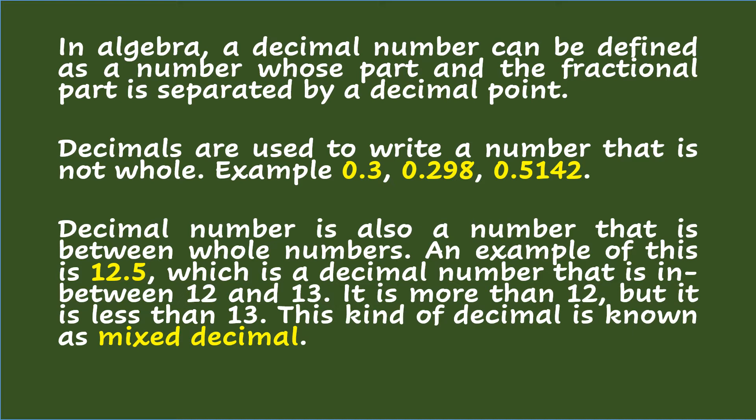A decimal number is also a number that is between whole numbers. An example of this is twelve and five-tenths, which is a decimal number that is in between twelve and thirteen — it is more than twelve but less than thirteen. This kind of decimal is known as a mixed decimal.